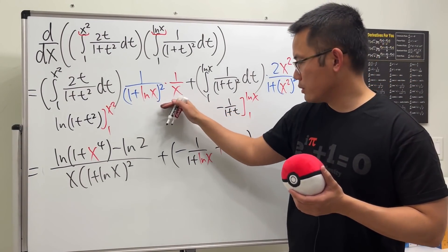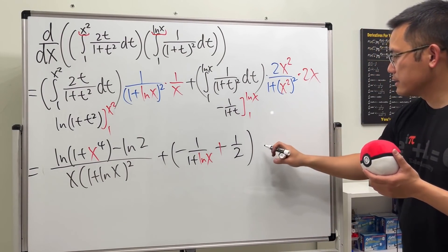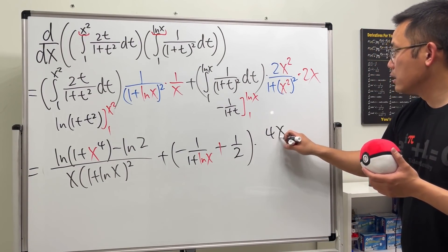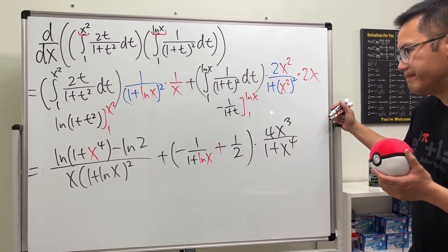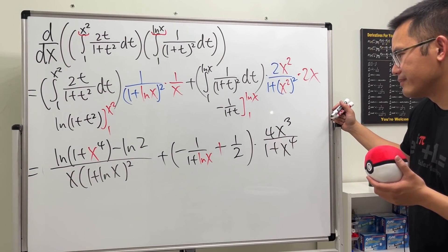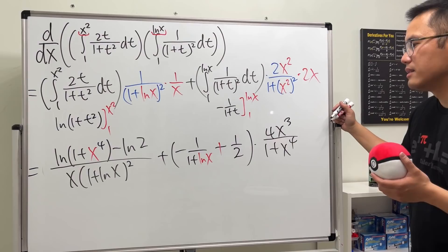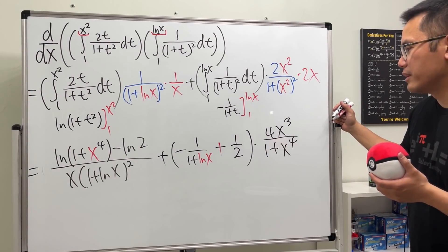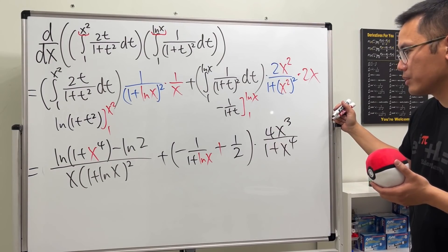But anyway, work this out, we get 4x to the third power over 1 plus x to the fourth power. And yeah, I'm just going to stop right here. Why not? Nothing else that we can do. Double check, triple check.